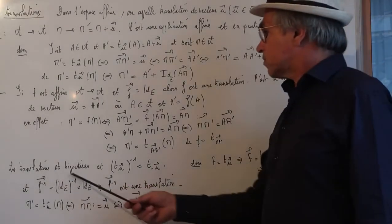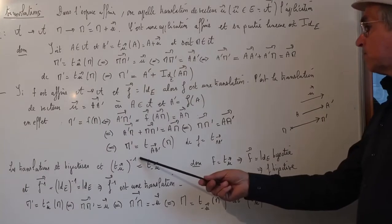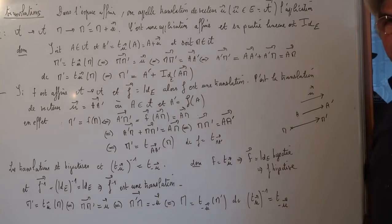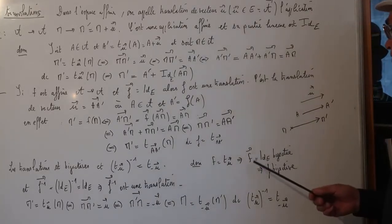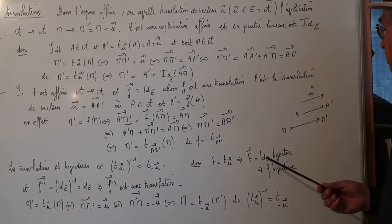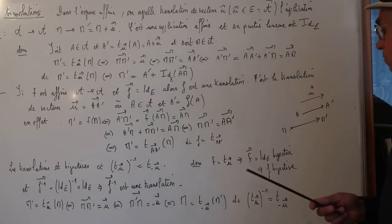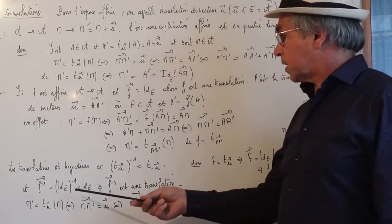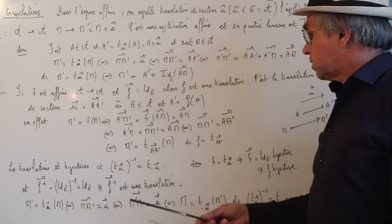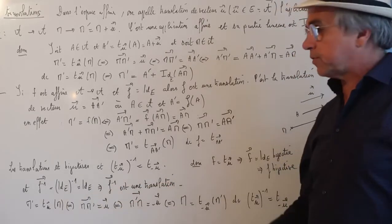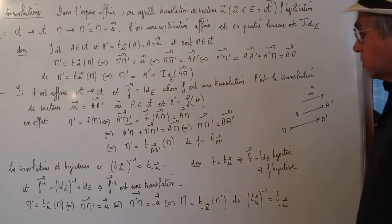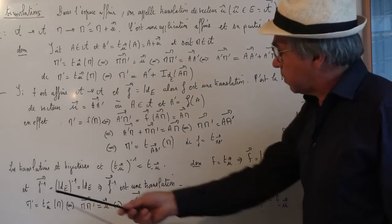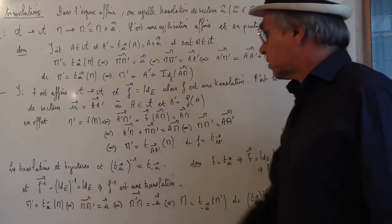Les translations sont bijectives, et la réciproque de la translation de vecteur U c'est la translation de vecteur moins U. Démonstration : si F est la translation de vecteur U, sa partie linéaire c'est l'identité, et l'identité est une bijection, donc F est bijective. D'autre part, la partie linéaire de la réciproque va être la réciproque de la partie linéaire, donc la réciproque de l'identité, qui est l'identité. Donc F⁻¹ est aussi une translation.